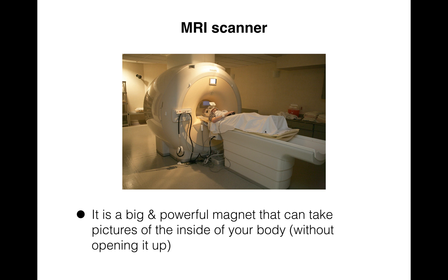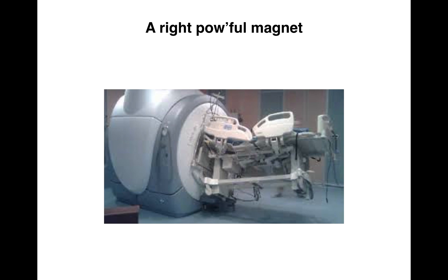So the MRI scanner is a big, powerful magnet that can take pictures of the inside of your body without having to open up that body. Someone goes into the center of the magnet called the bore. How powerful a magnet? Powerful enough that if you've got ferromagnetic equipment in the hospital, you have to be real careful not to pull it into the same room as the scanner, because it'll just pull that stuff right into the bore.